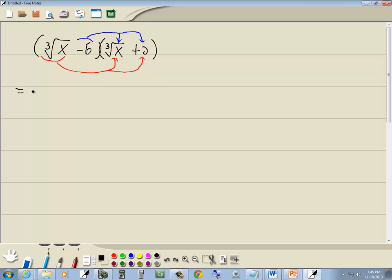So we're going to have cube root of x times cube root of x. We're going to have the cube root of x times 2 minus 6 times the cube root of x minus 6 times 2. FOIL if you learned that technique.